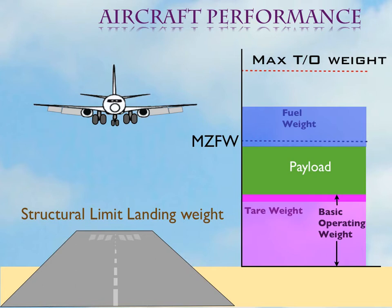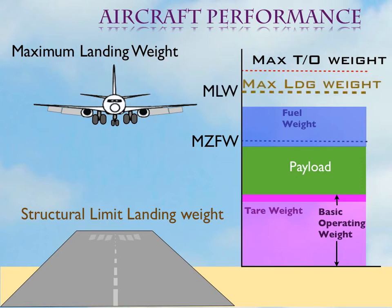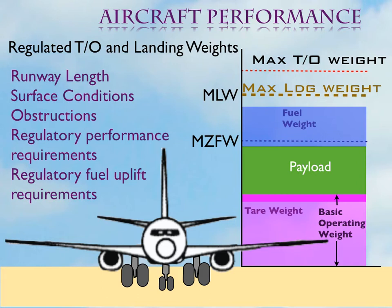Similar to the maximum structural takeoff weight, there is a limit to the maximum landing weight of the aircraft, limited for similar structural reasons discussed earlier. The landing weight could also be limited by other factors such as runway length and ambient conditions. Many medium-performance aircraft do not have such a limitation; however, high-performance aircraft usually define a maximum landing weight, referred to as MLW. To summarize, the maximum takeoff and landing weight of an aircraft could be limited by several other factors. These limited weights are called regulated weights, and we shall learn about these in detail in the following lessons.